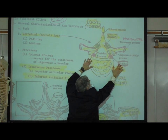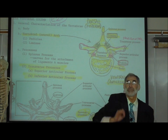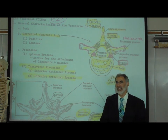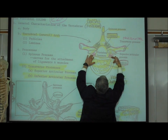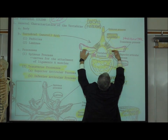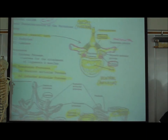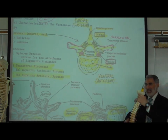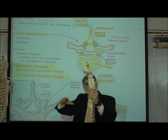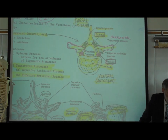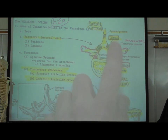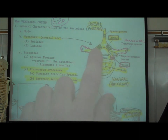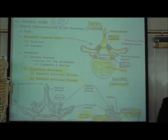After the transverse processes is a flat area called the lamina — the word lamina means flat. Finally, there is the spinous process at the back. So the laminae are on both sides of the spinous process.